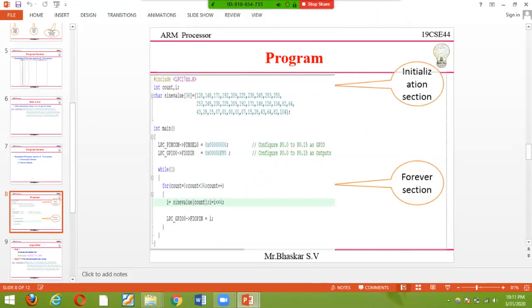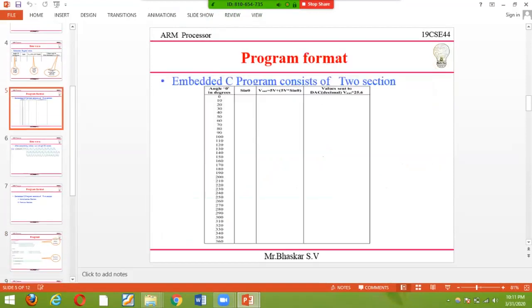The program is almost the same. This sine value part is extra compared to before. Instead of ramp or triangular waveform, here we take 36 sine values, count them, and load to the pin. It's very simple. You need to know how to calculate the values—please calculate, find the values, and do it. For more explanation, please see the next video and subscribe to the channel. Thank you.